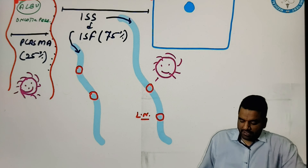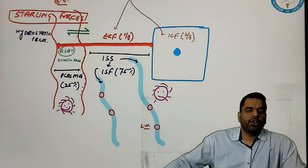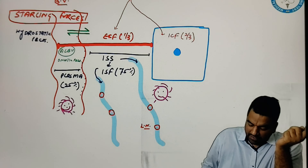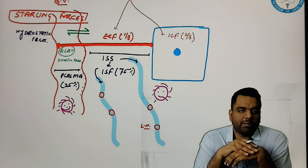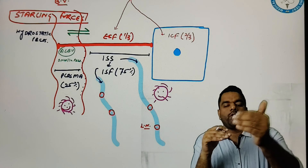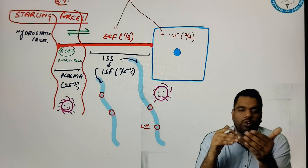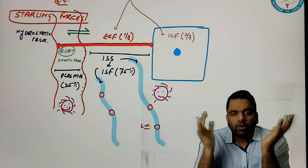Now please pay attention to what happens. There is a condition called as tumor. What is the meaning of tumor? The cell is having a magic property — it can divide: from one cell it can make 2, 2 to 4, 4 to 8. But suppose this division goes out of control and nobody is there to control this division.